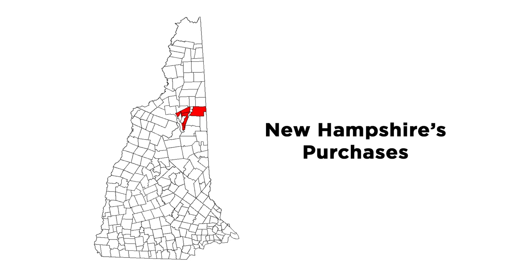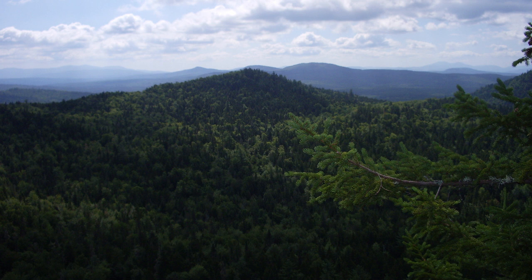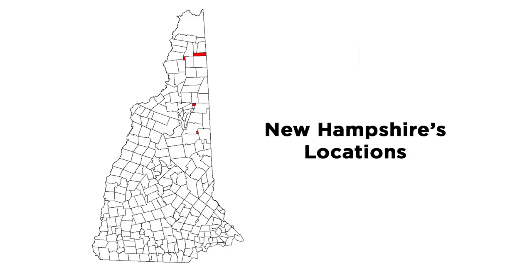The other four types of names for these unincorporated areas all have a person or a group's name in front of them, which is kind of an interesting look into the history of these states. One example is the purchase — Crawford's Purchase, New Hampshire, for instance, is named that because it was purchased by Ethan Crawford back in 1834; he paid about 50 cents an acre, which is a pretty good deal. There is also the grant — Second College Grant New Hampshire gets its name because it was the second parcel of land granted by the state to Dartmouth College, which still owns the land over 200 years later. There are also gores, which come from an Old English word meaning corner — you can see that they're kind of pointy. And then there are locations, which is when they apparently decided to stop being creative with the names.